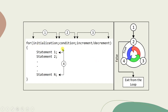Let's understand it in more detail using a flowchart. I have numbered all the sections: initialization is numbered 1, the condition is numbered 2, increment/decrement is numbered 3, and all the statements to execute multiple times are numbered 4. Initialization (1) is executed only once, outside the looping part.